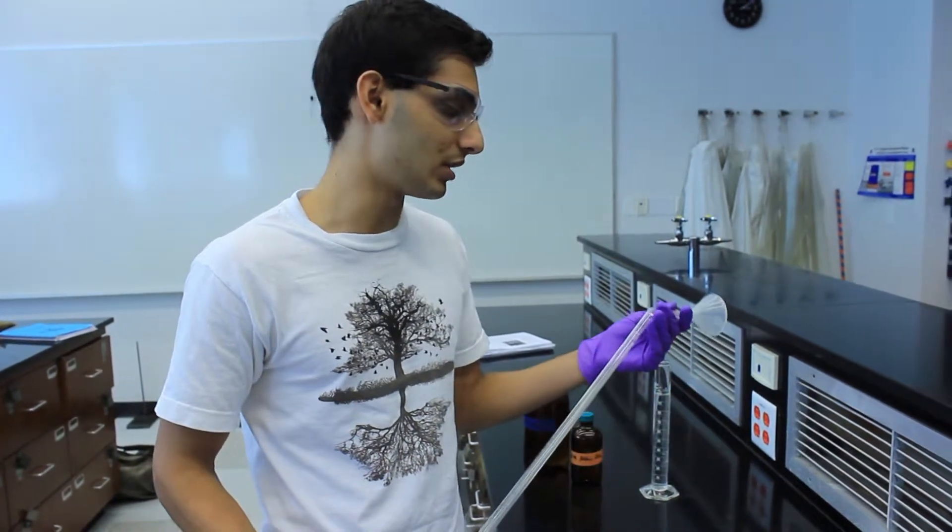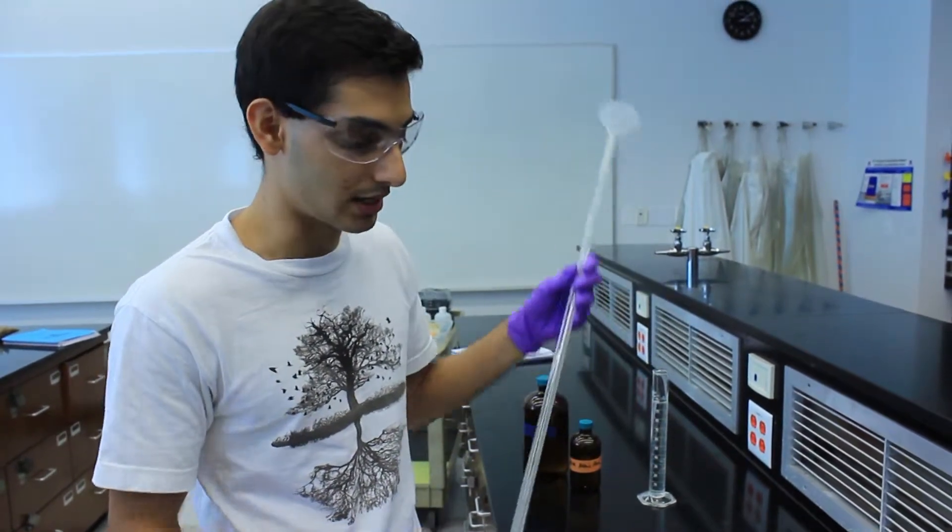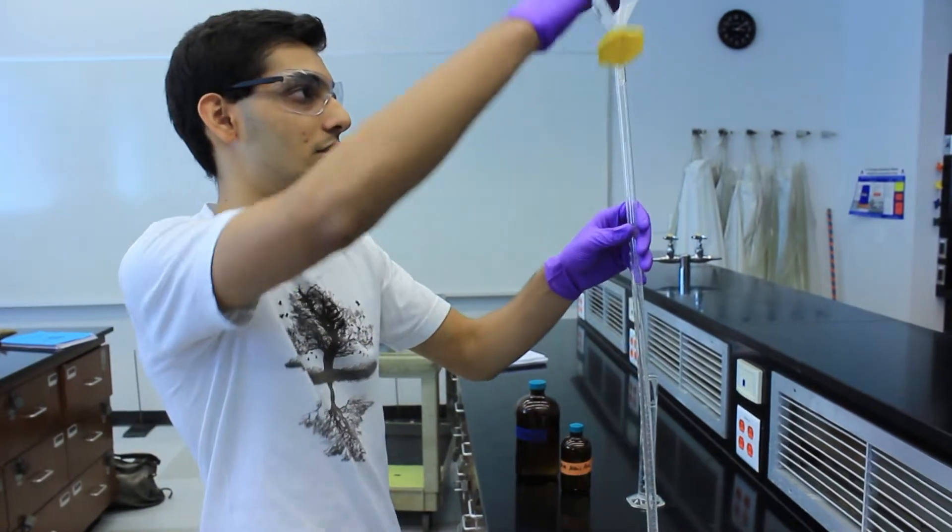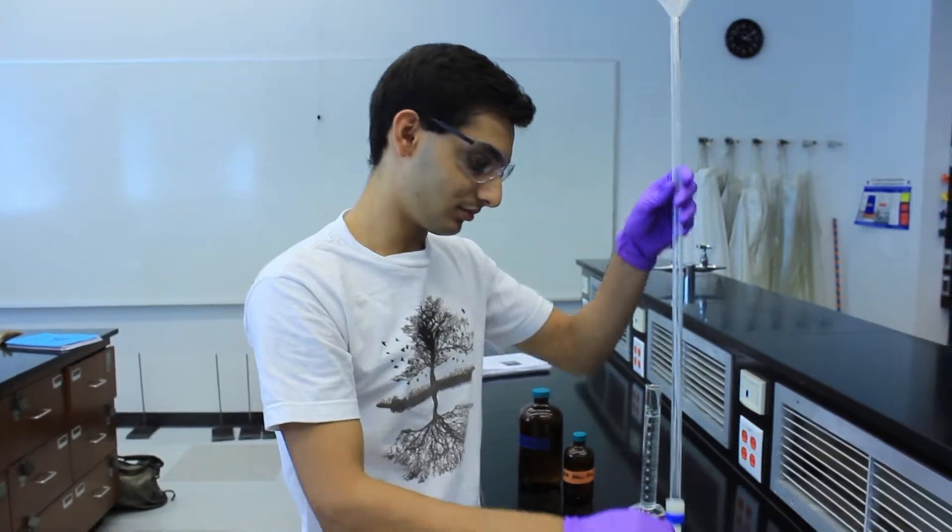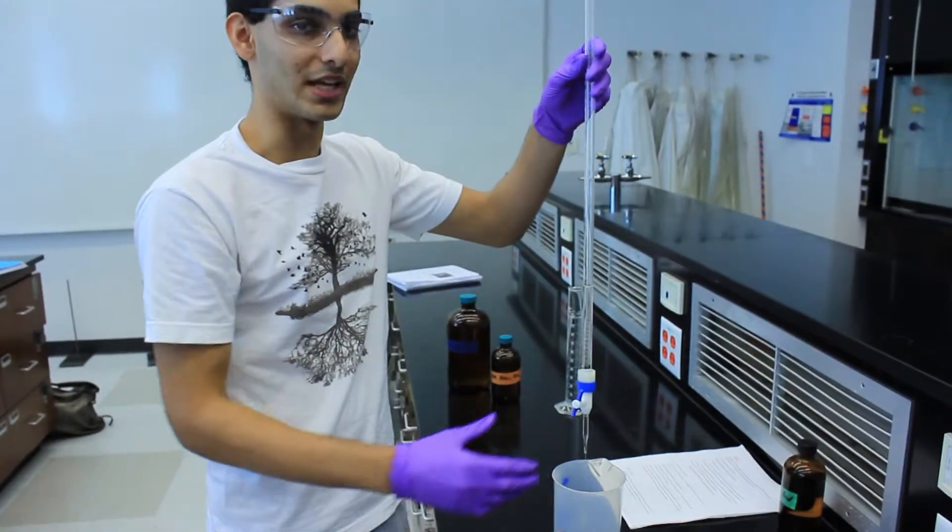Before you start the titration, you need to prepare the burette. In order to do that, you need to rinse it with sodium hydroxide. Take 10 milliliters and just pour it into the burette, and then empty it into a waste beaker.